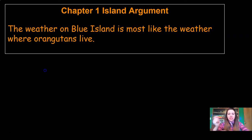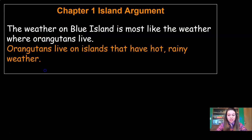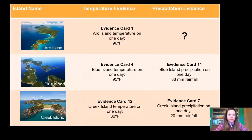Do you remember what the weather is like where orangutans live? What two things are we looking for in the weather for the reserve? Yeah, we're looking for hot weather and we're looking for rainy weather. So let's add that to our argument. I've written in orange: orangutans live on islands that have hot, rainy weather. Now we can be sure that our audience knows what weather we're looking for. Let's go back to our evidence because it's time to draw on this evidence from the evidence table and put it into our argument to support our claim.